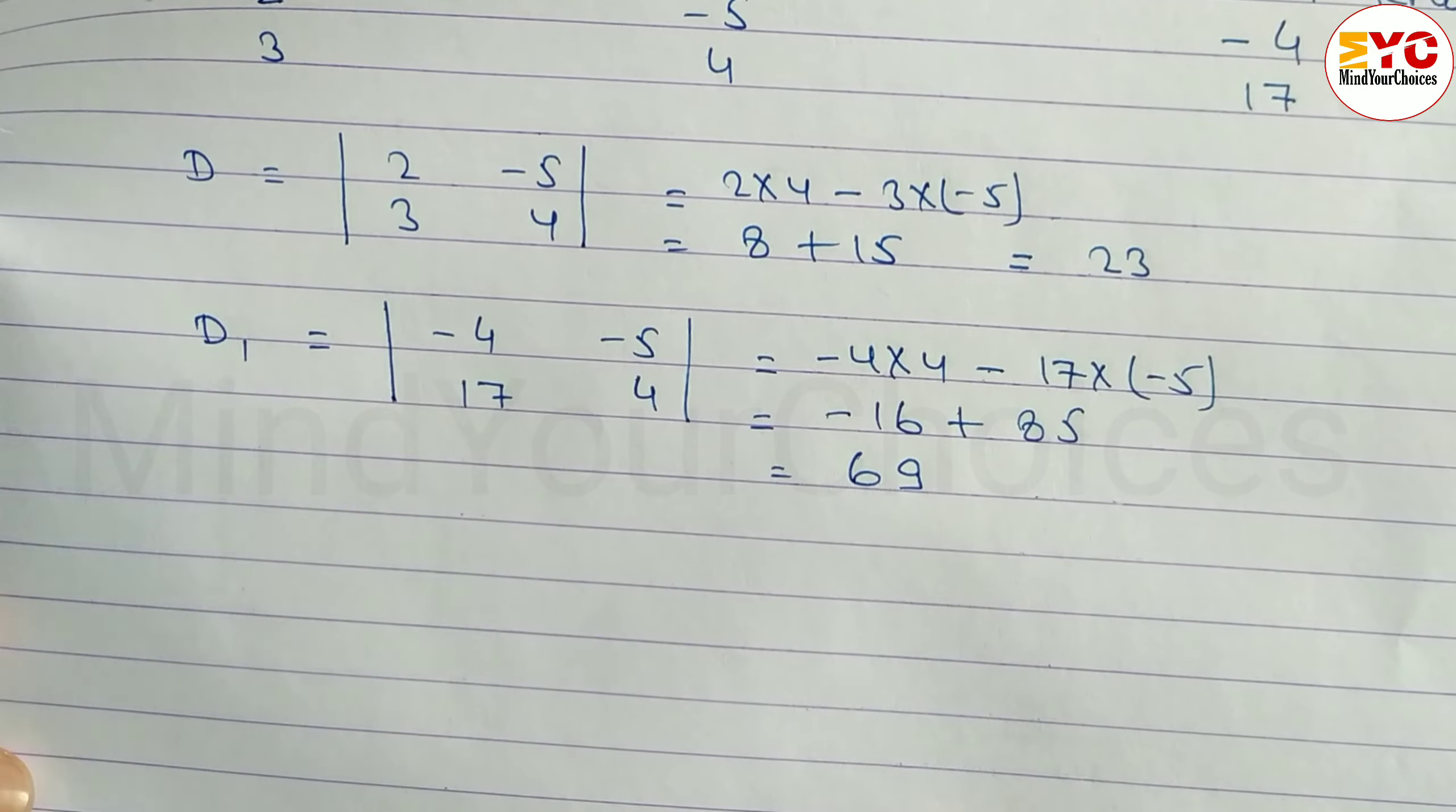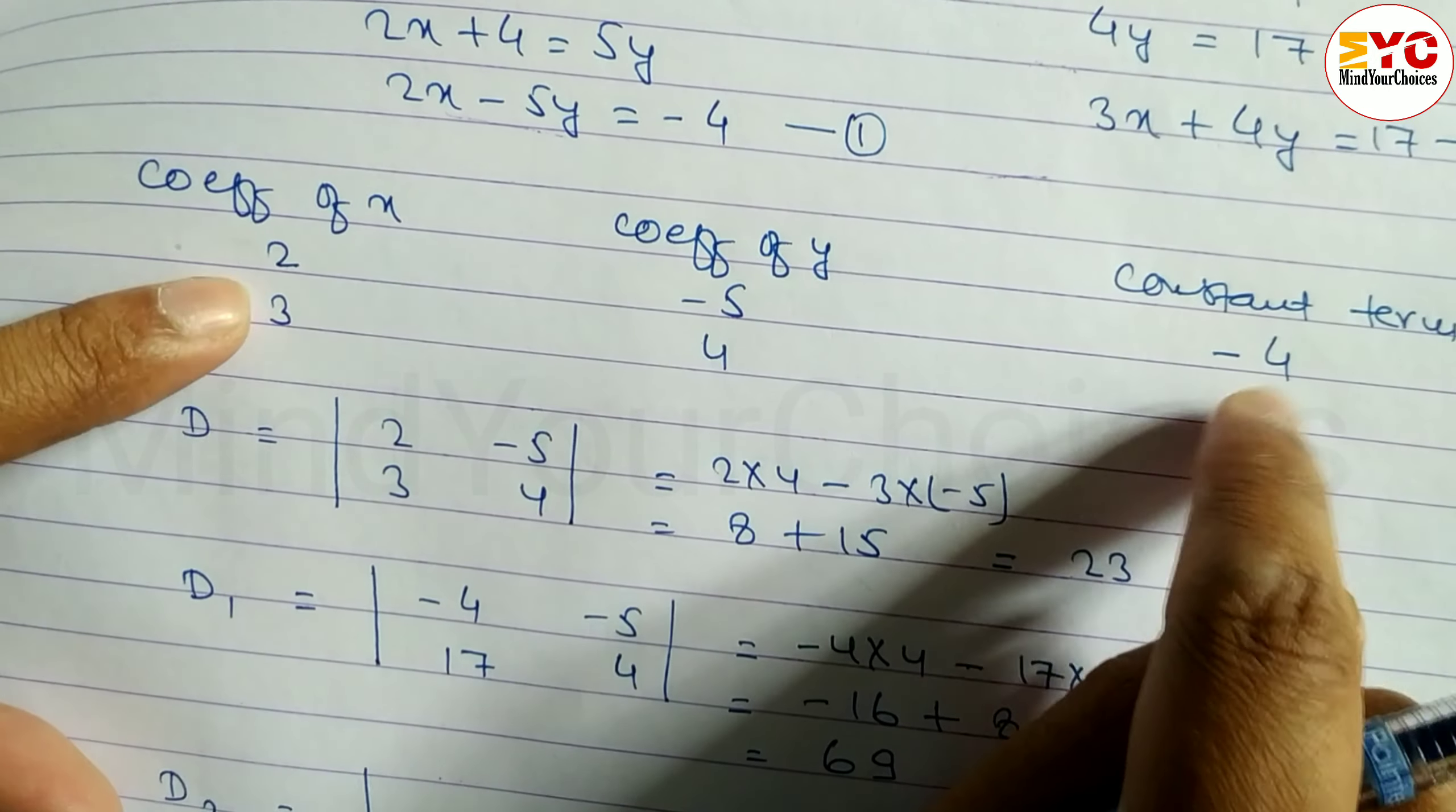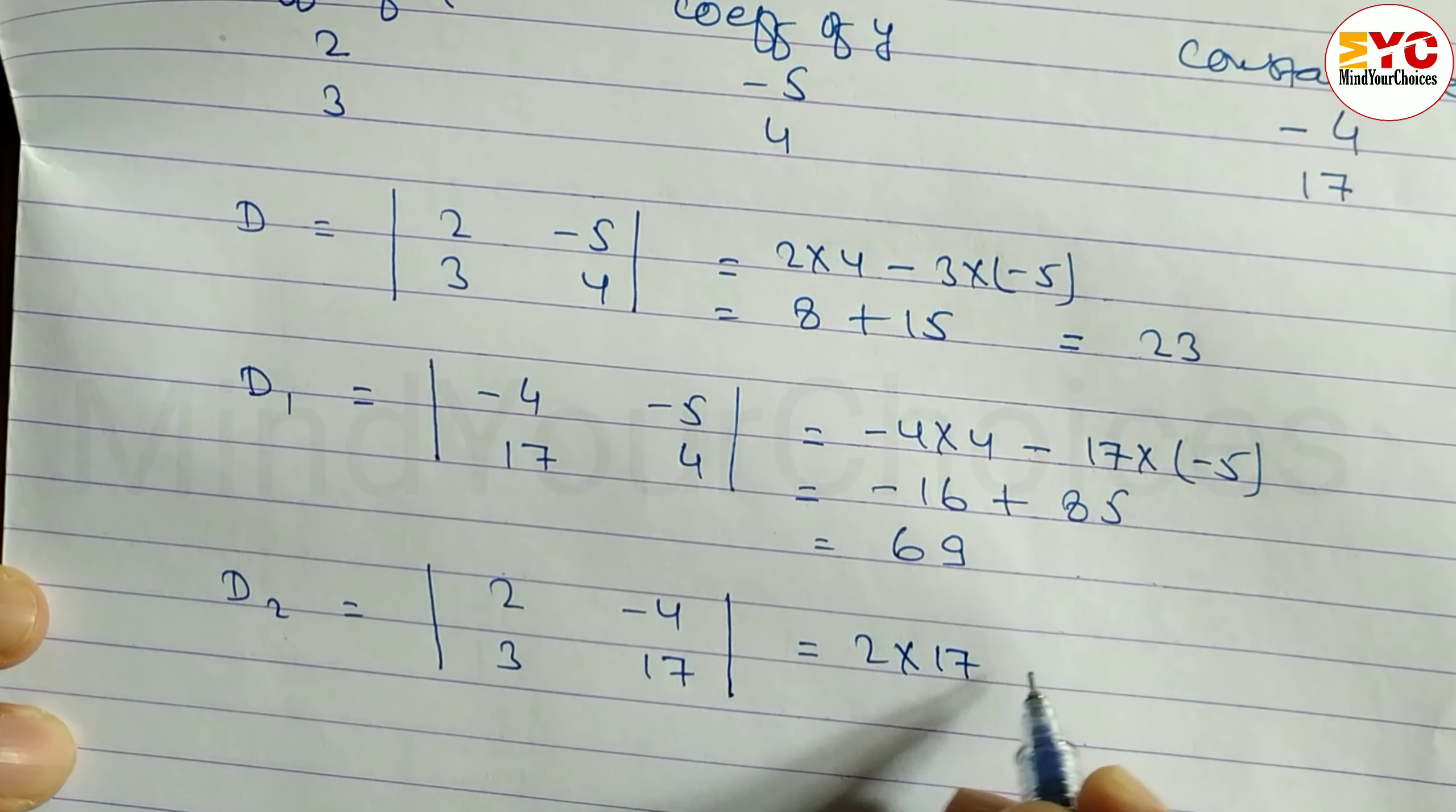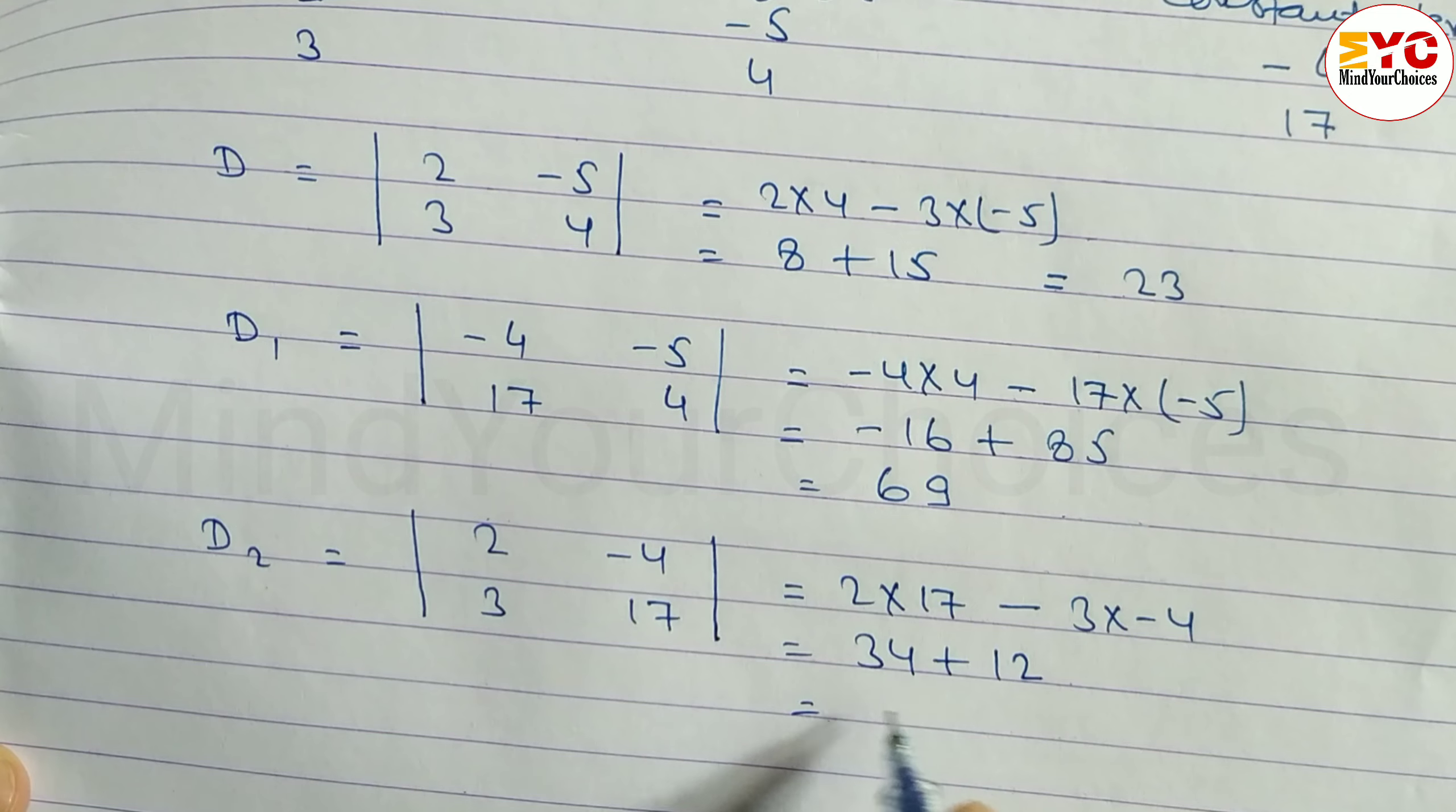Similarly we have to find out D2. The formula for D2: first we take coefficient of x and constant term. So we can write 2, 3, minus 4, 17. Calculate: 2 into 17 minus 3 into minus 4. 17 into 2 is 34. Minus times minus is plus, 4 times 3 is 12. Add them: 46.